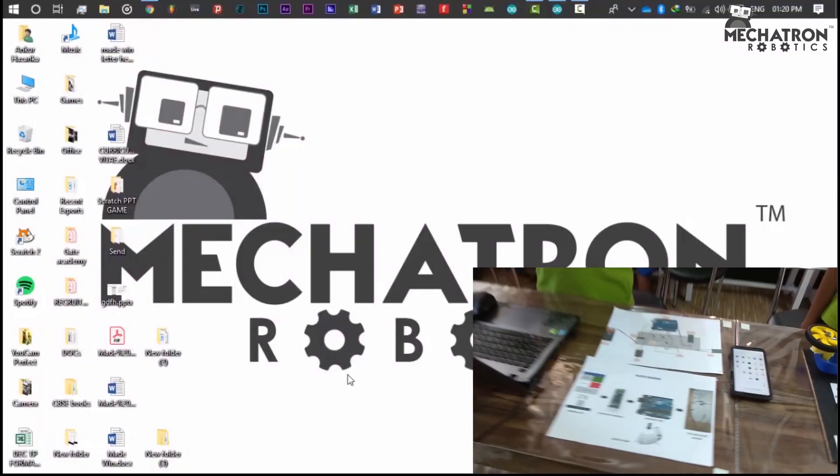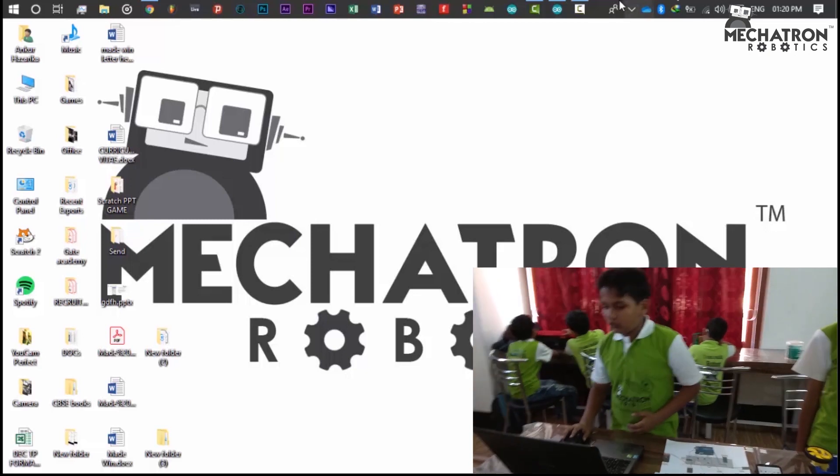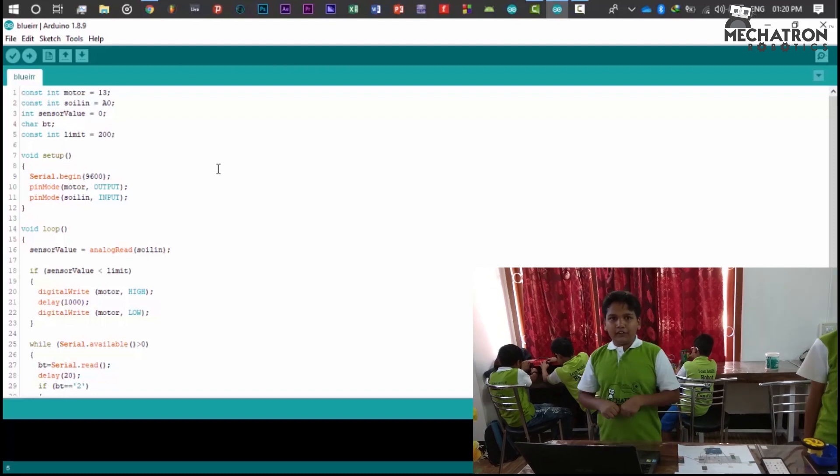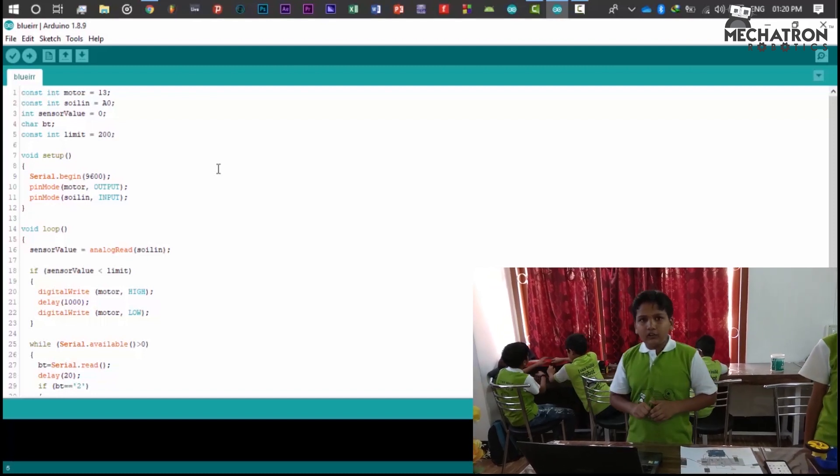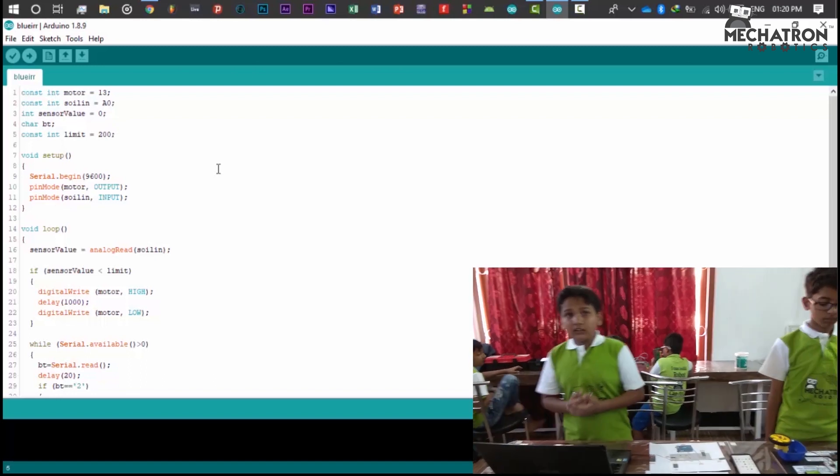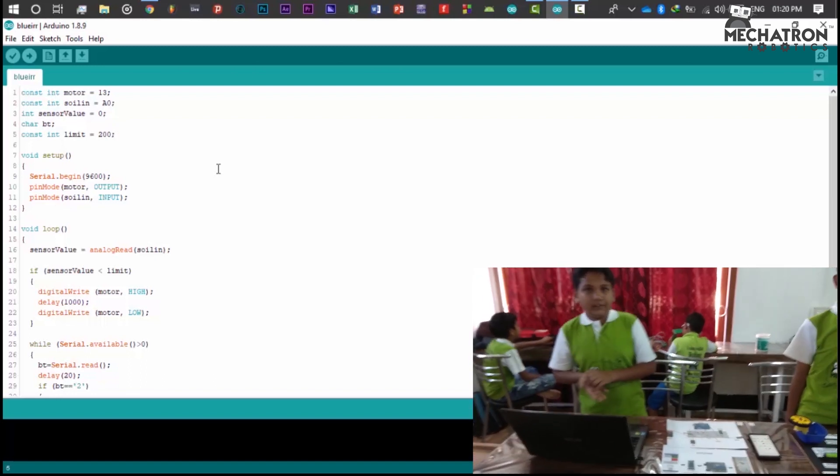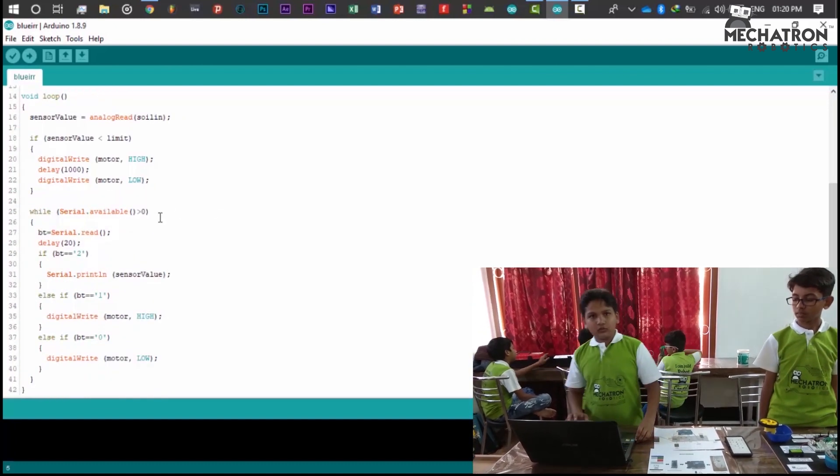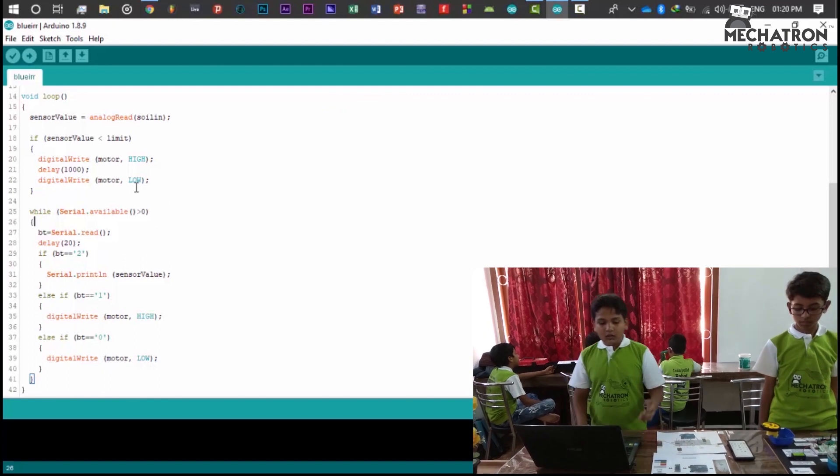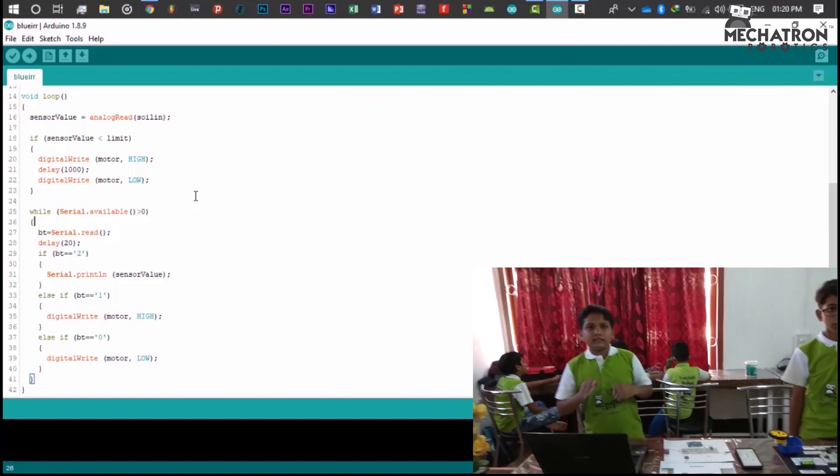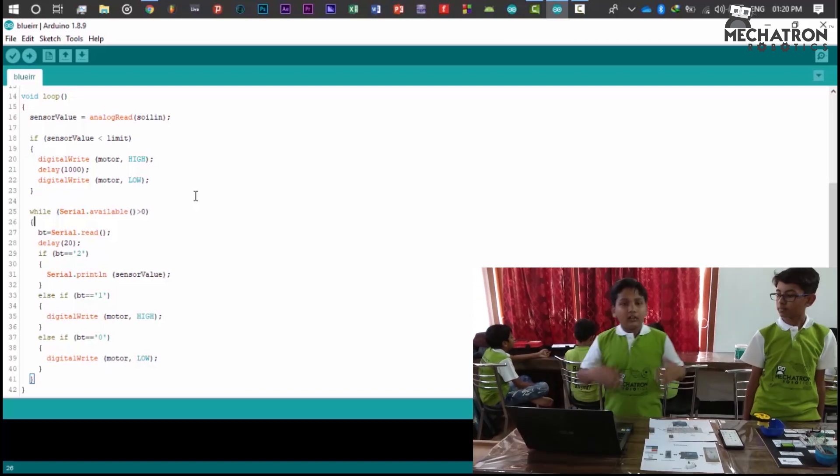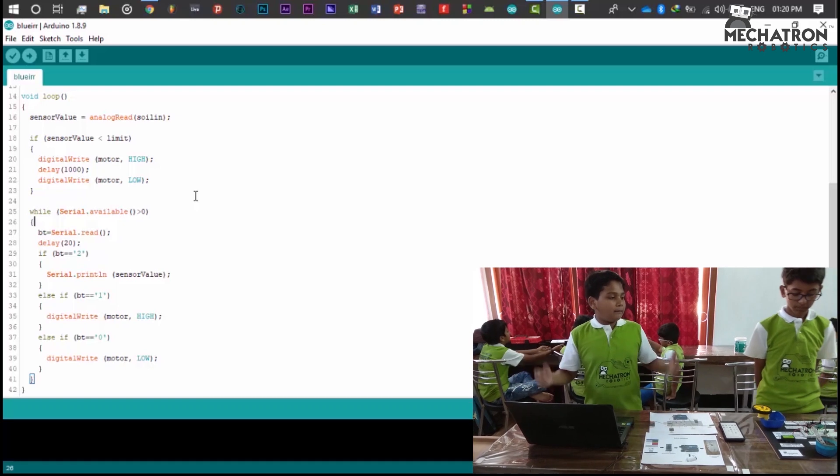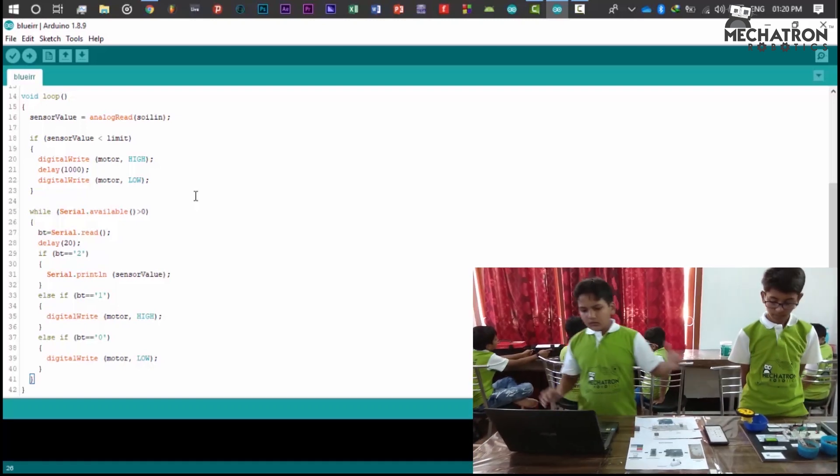I have used Arduino software for making the codes. Now I will show you the codes. If the sensor value is less than 200, the Arduino will pump the water. And if the sensor value is greater than 200, we have to control it manually. If the sensor value is greater than 200, it will switch on to the serial.available part. Serial.available part means the serial connection, if the serial connection is available or not, between the Arduino and the Bluetooth module.